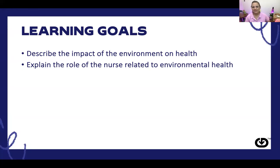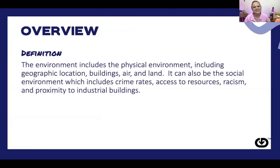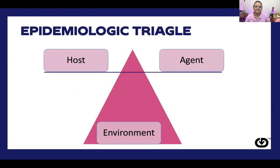The environment includes the physical environment — geographic location, buildings, air, and land — but it can also be the social environment, which includes things like crime rates, access to resources, prevalent racism, and proximity to industrial buildings. The epidemiologic triangle explains the relationship between the agent (like a virus or bacteria), the host (which is typically us), and the environment itself, and how they're really interconnected.